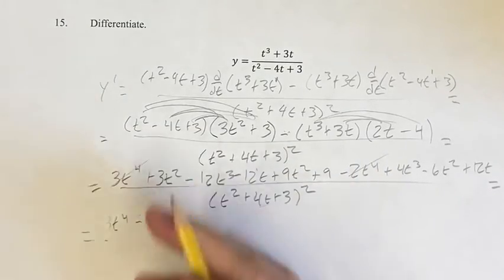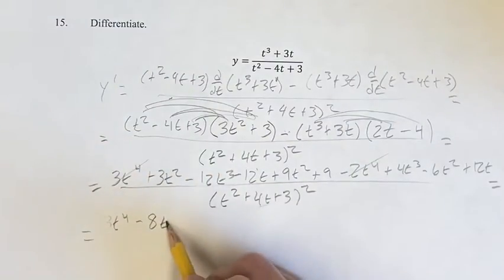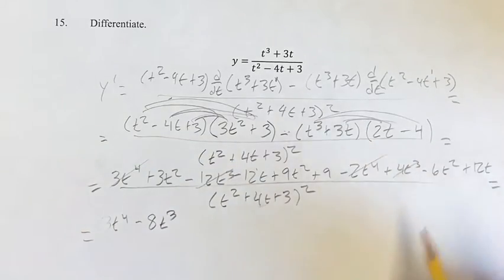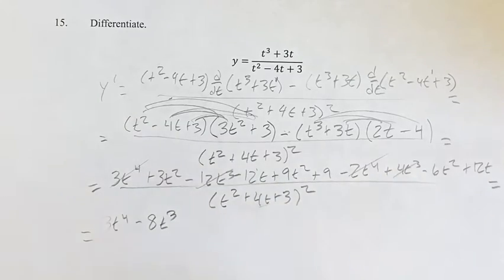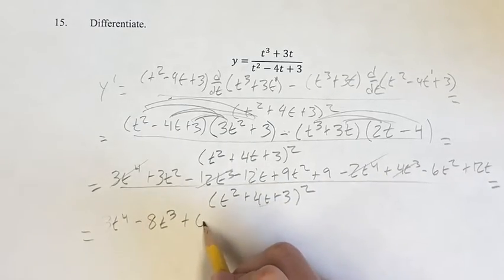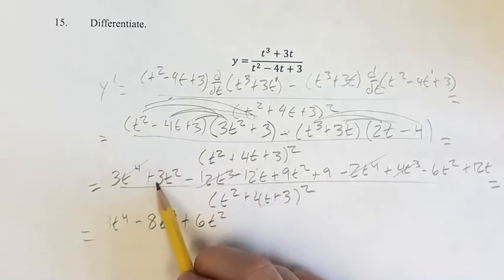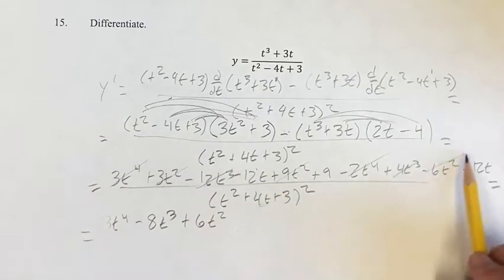Which comes out to minus 8 when we're adding them together, t cubed. Counted these off now. Then for t squared, we have plus 3, plus 9, minus 6. If we add all those up, that comes out to plus 6t squared. 3 plus 9 is 12, minus 6 is 6.